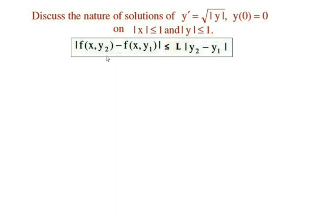What is a Lipschitz condition? A function f(x,y) satisfies a Lipschitz condition in the rectangular region if there exists a positive real number L such that |f(x,y₂) - f(x,y₁)| ≤ L|y₂ - y₁|. Here, f(x,y₂) and f(x,y₁) are considered from f(x,y), where f(x,y) is taken from y' = f(x,y).